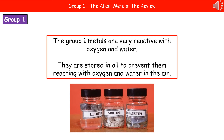Welcome to our review on Group 1, the alkali metals. The first thing we need to know is where we're going to find them on the periodic table. Remember, in your exam you get a copy of the periodic table on your chemistry data sheet, and the alkali metals are found right on the far left-hand side, the first column there. Alkali metals, Group 1, the first column on the far left of our periodic table.